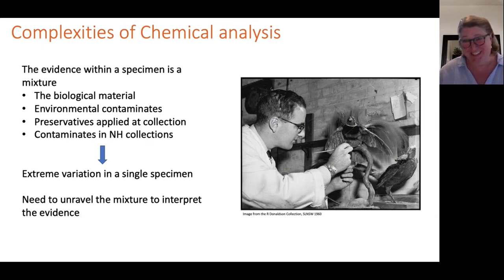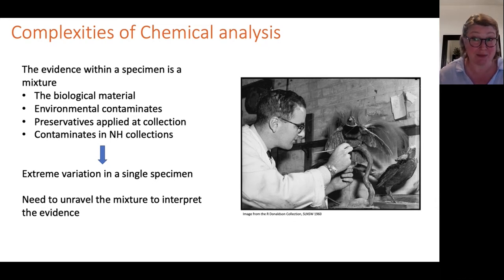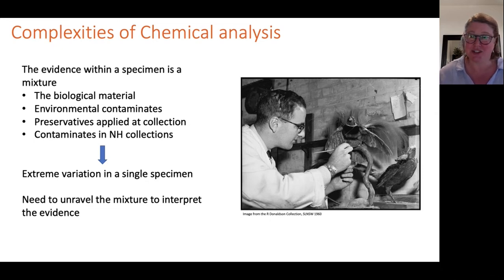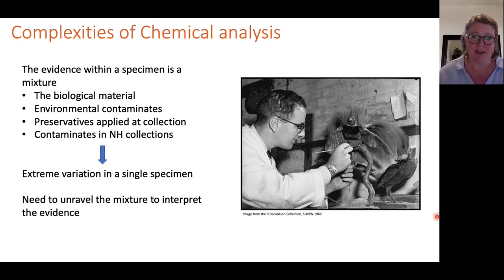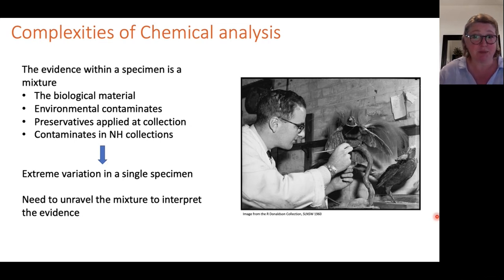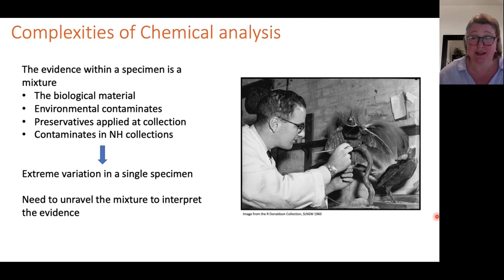The challenge is that chemical evidence within a natural history specimen is a mixture of biological material, environmental contaminants acquired during its life, preservatives applied at collection, and contaminants and pesticides acquired during transport, trade and the museum environment. When a preservative is applied by brush or by hand, there is natural variation in concentration depending on how loaded the brush or hand is at any given moment.